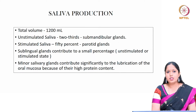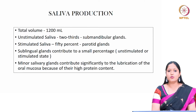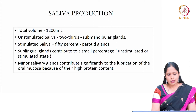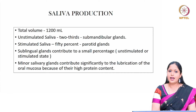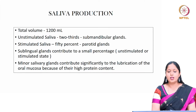Coming to saliva production, the total volume of saliva is approximately 1200 ml. Two-thirds of unstimulated saliva is produced by the submandibular glands, whereas 50% of stimulated saliva is produced by the parotid glands. Sublingual glands contribute a small percentage for both. Minor salivary glands contribute significantly to lubrication of the oral mucosa due to their high protein content.